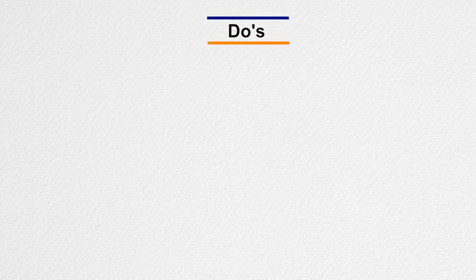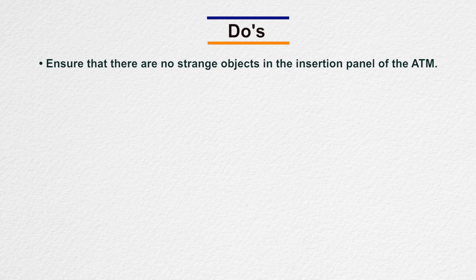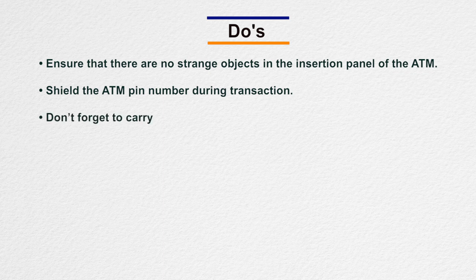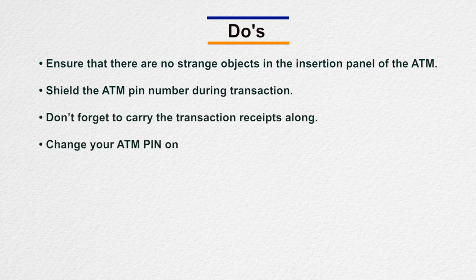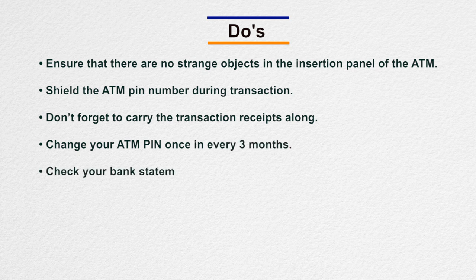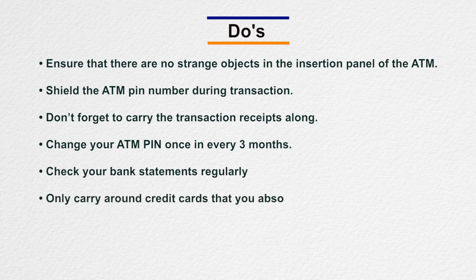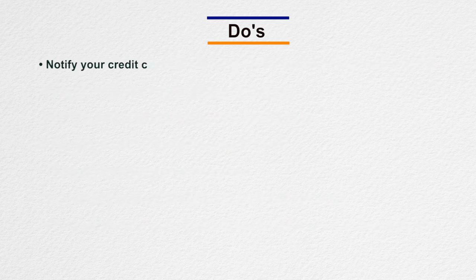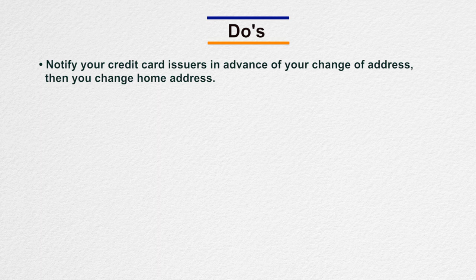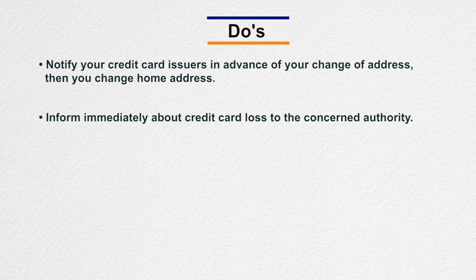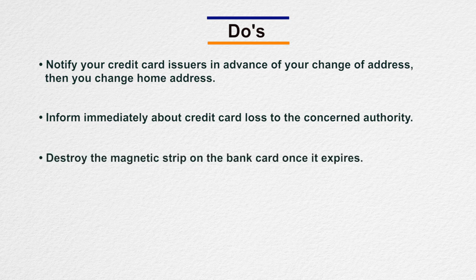Do's: Before you use an ATM, ensure there are no strange objects in the insertion panel. Shield your ATM pin number during transactions. Don't forget to carry the transaction receipts. Change your ATM pin once every three months. Keep your credit card receipts to guard against transaction frauds. Check your receipts against your monthly statement. Only carry credit cards that you absolutely need. Shred anything that contains your credit card number. Notify your credit card issuer in advance of any change of address. If you lose your credit card, report the loss immediately. When disposing of a card at renewal or upgrade, cut it diagonally before disposal.